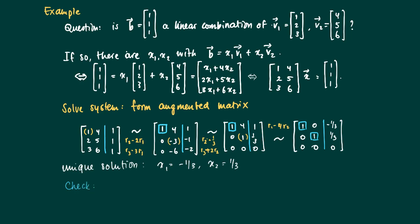So we may check this. We form the combination minus one third times the vector [1,2,3], and we add one third times [4,5,6].